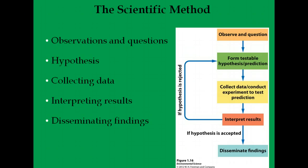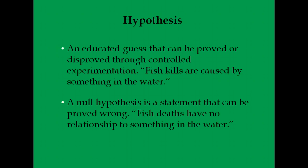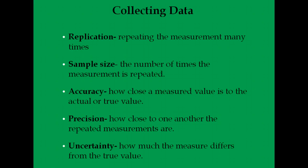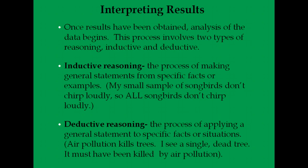Since we've already gone through the scientific method and you've done a lab, make sure you understand the different steps. The first step is to observe and question. Create a hypothesis — an educated guess. Note that a null hypothesis is a statement intended to be proved wrong. For example: 'fish deaths have no relationship to something in the water.' When scientists collect data, you need to repeat it and ideally have high accuracy and high precision — make sure you understand the difference between those two.